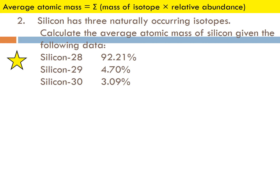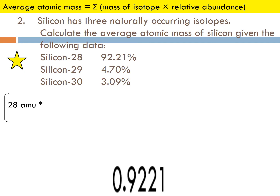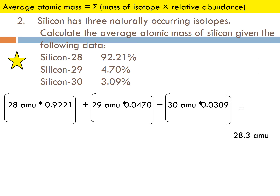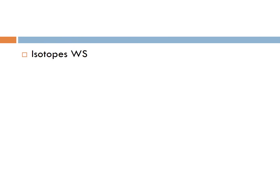Here's silicon. We have three isotopes: silicon-28, silicon-29, and silicon-30, with masses of 28, 29, and 30 AMUs. The majority is at 28 AMUs at 92.21%. So 28 times 0.9221, plus 29 times 0.047, plus 30 times 0.0309, gives you 28.3 AMUs. Let me know if you have questions — we will review this in class, and then do your isotope worksheet.